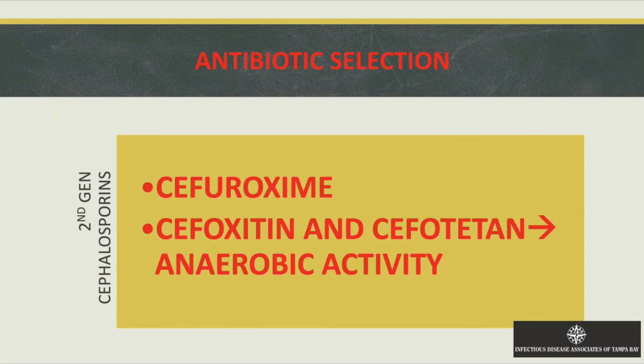Other antibiotics used for pre-op prophylaxis include cefuroxime, cefoxitin, and cefotetan, which have more anaerobic activity. Unasyn (ampicillin-sulbactam) is another option. These can be used instead of ANCEF for GI surgeries and other cases where anaerobes play a primary role.